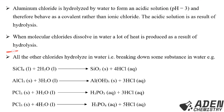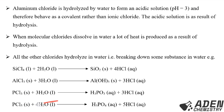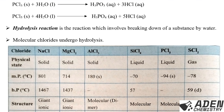Other chlorides are also hydrolyzed in water — hydrolysis meaning the breaking down of a substance by water. For example, silicon tetrachloride (SiCl₄), a molecular substance, dissolves in water to form silicic acid and 4 moles of hydrochloric acid. Aluminium chloride is hydrolyzed in water to form aluminium hydroxide and 3 moles of hydrochloric acid. Phosphorus trichloride (PCl₃) reacts with water to form phosphoric acid and hydrochloric acid. Phosphorus pentachloride (PCl₅) reacts with water to give phosphoric acid and hydrochloric acid.